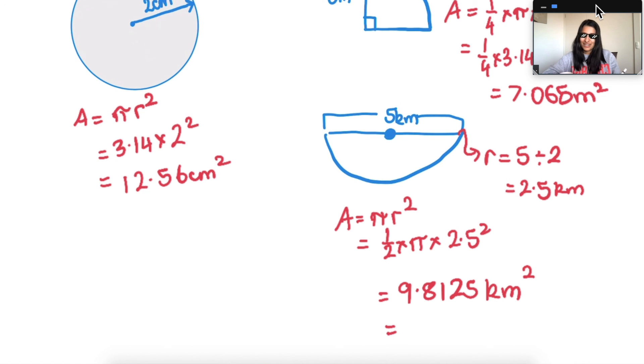Remember all areas have a little two for the square, and if you need to do some one decimal place, the next number after the eight is 1, so you just keep it at 9.8. This is one decimal place. So hopefully now you're feeling a little bit more confident with how to find the areas of circles, quarters, and halves.